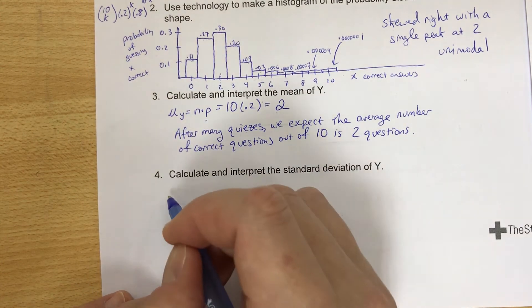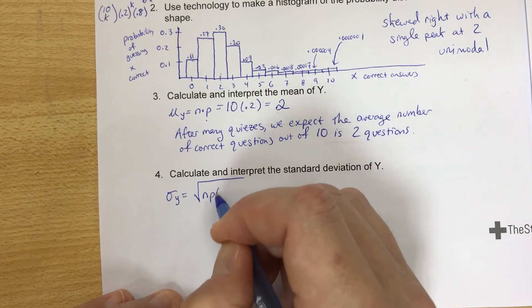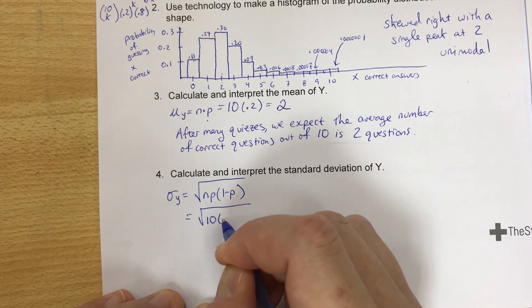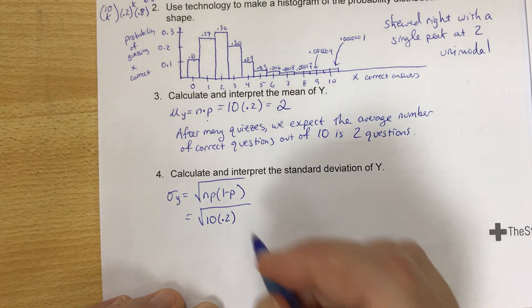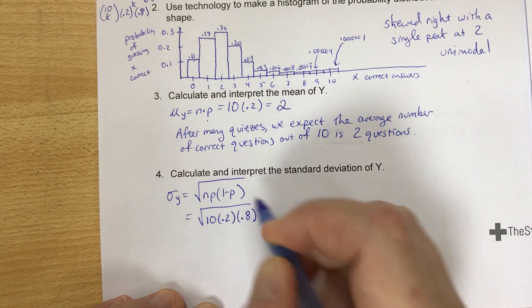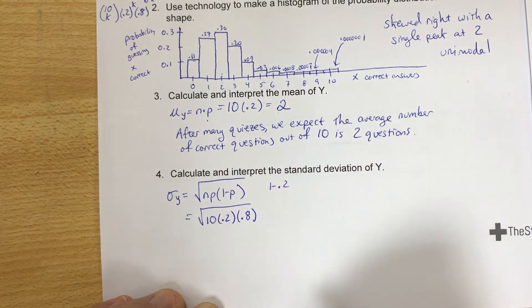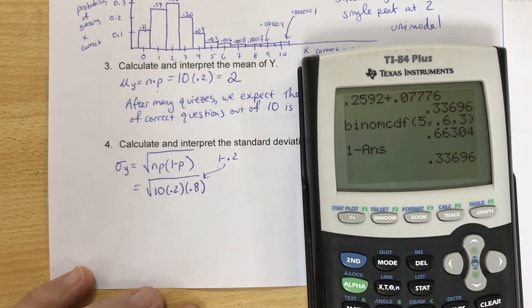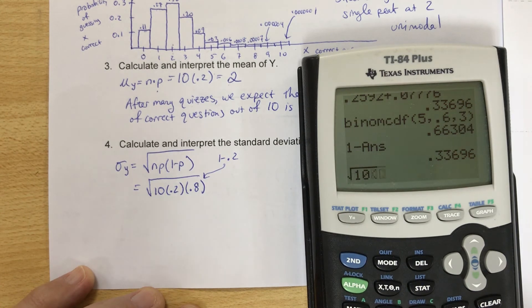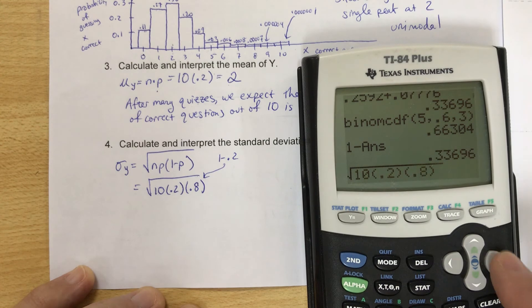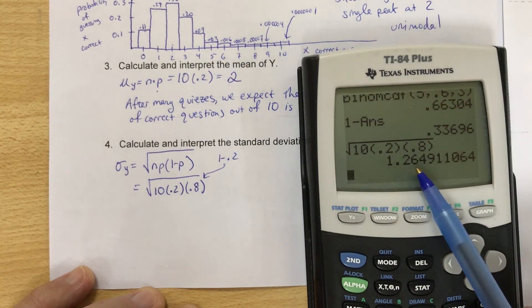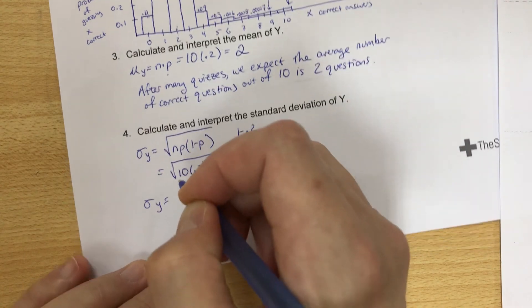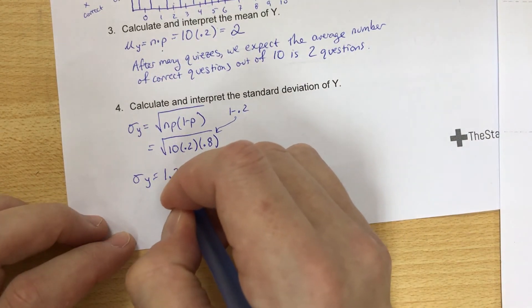Calculate and interpret the standard deviation of Y. Standard deviation is the square root of n times p times 1 minus p. So that would be the square root, 10 trials. The probability of guessing correctly is 0.2. The probability of guessing incorrectly is 0.8. That's 1 minus 0.2. That's how we're coming up with that value right there. And this is the calculator question. So square root, 10 times 0.2 times 0.8. Looks good. Enter. And we get 1.26, 1.265.